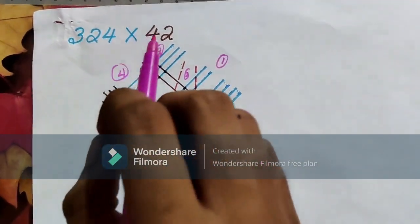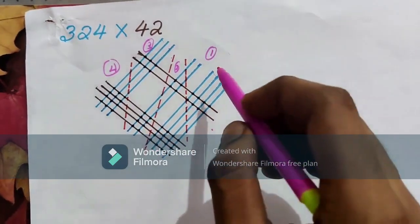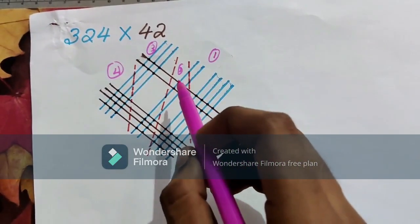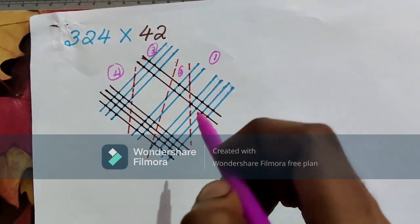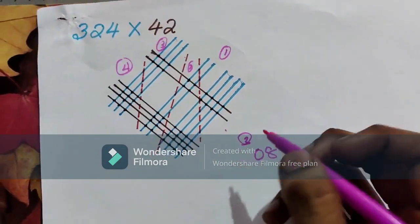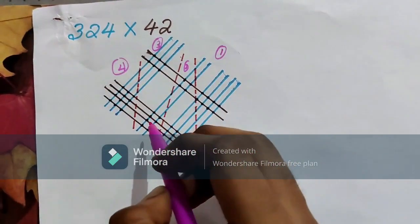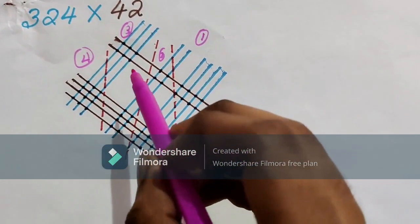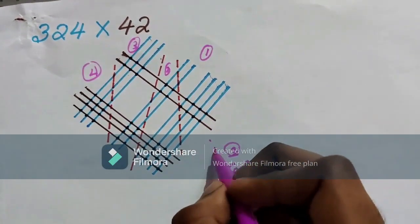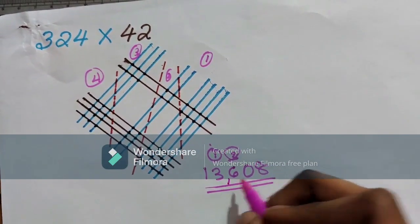Here, we are multiplying one 3-digit number and another 2-digit number by drawing the figure. We are dividing the figure into 4 segments. In the first segment, we are counting the points and putting them in the units place. And then, going to the second segment and counting the points: here 4, 16, 20. And carry over 2. And going to the third segment, here there is 14 points plus 2, 16, 1 and going to the fourth segment, there are 12 points and 13. And your answer is 13,608.